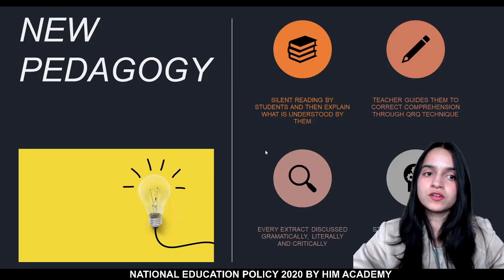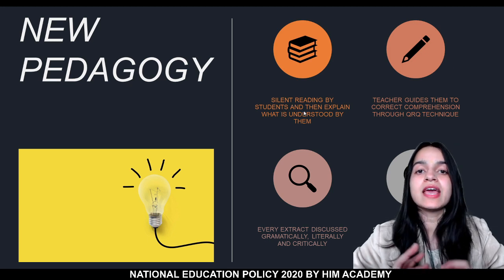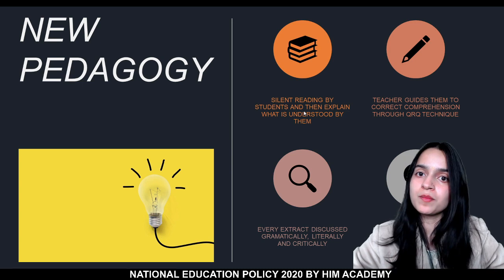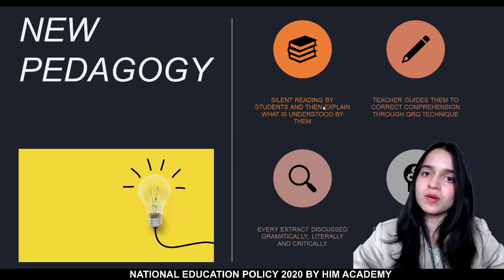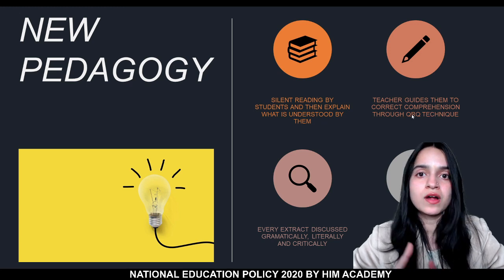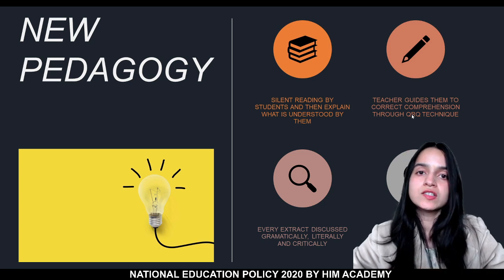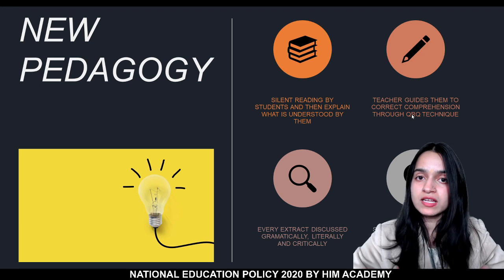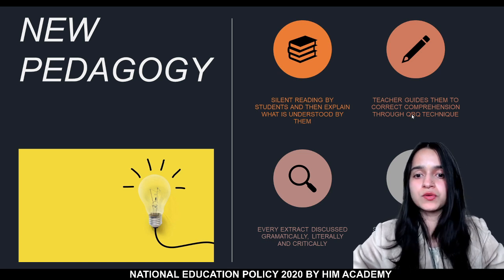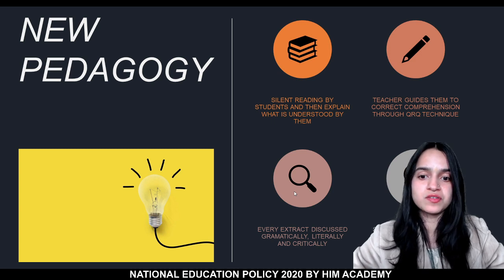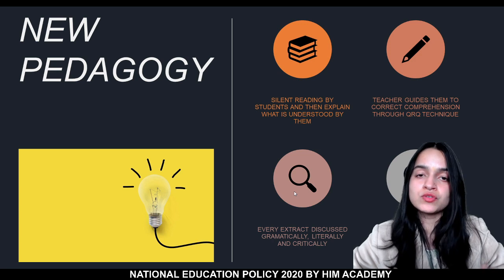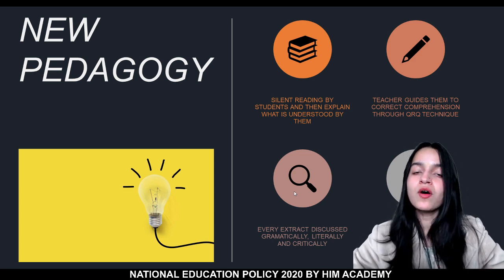In the new pedagogy, silent reading is done by the student, and then the student explains to the whole class what they have understood — making use of both speaking and comprehension skills. If there are problems with the comprehension, the teacher will guide them using the QRQ technique: Question, Response, Question. This means you ask a question, get a response, and if the response is not correct you do not correct it directly — instead you ask more questions to guide the child toward the right response. Every extract is discussed grammatically, literally, and critically, and finally the student answers based on their own comprehension.